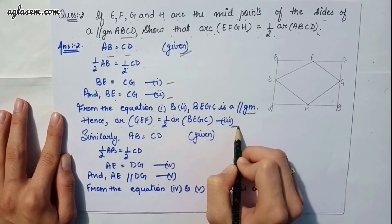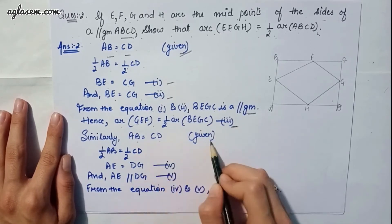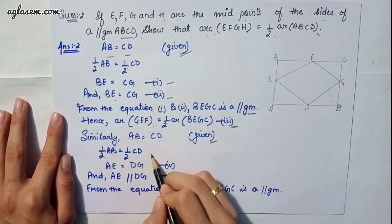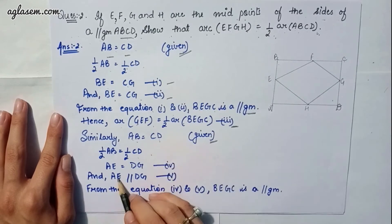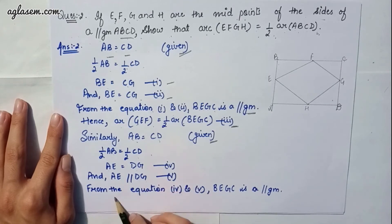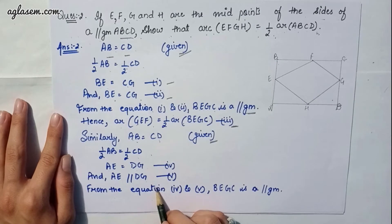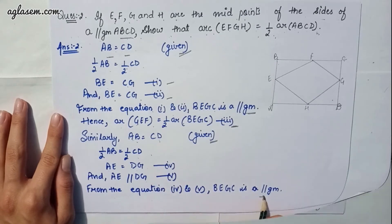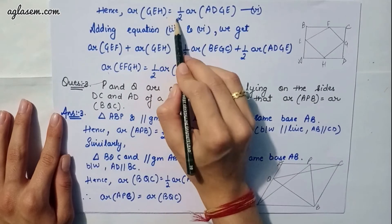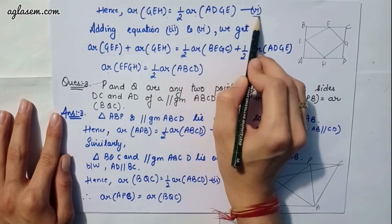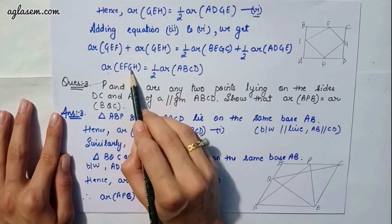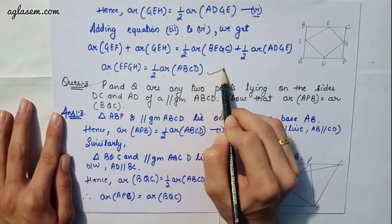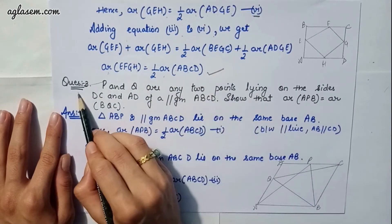Similarly, AB equals CD is given, and half AB equals half CD. Our fourth equation gives AE equals DG, and AE parallel to DG is our fifth equation. From these equations, ADGE is a parallelogram, so area of triangle GEH equals half of area ADGE, which is equation 6. Adding equations 3 and 6, we get area EFGH equals half of area ABCD, which is what we had to prove.